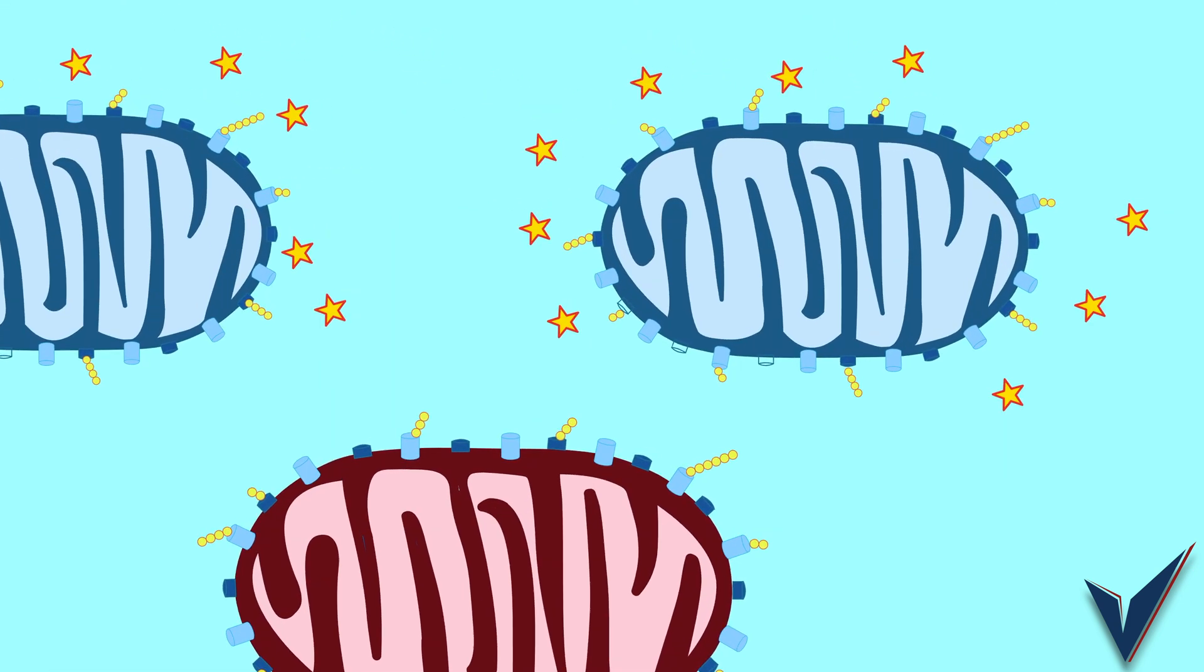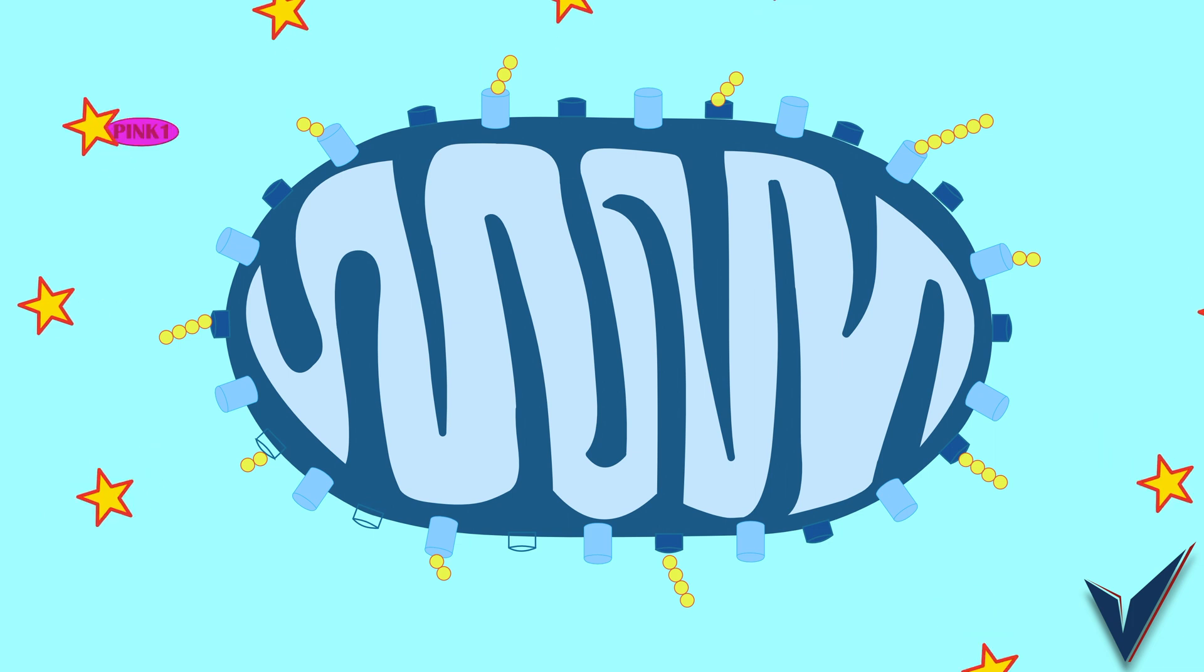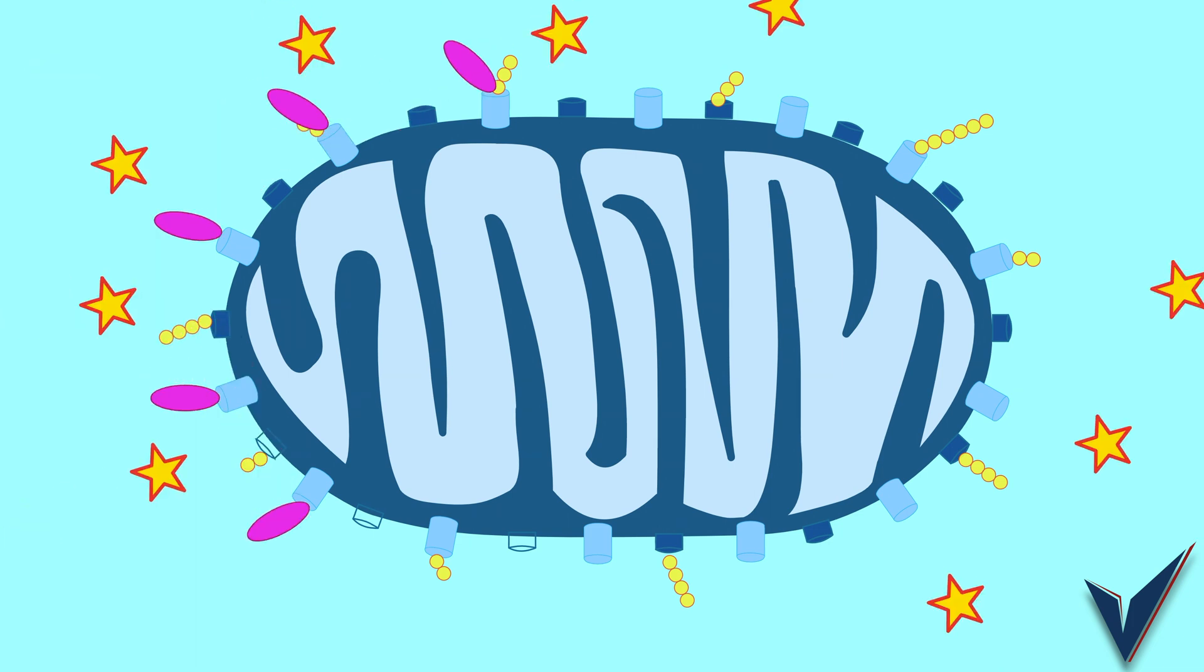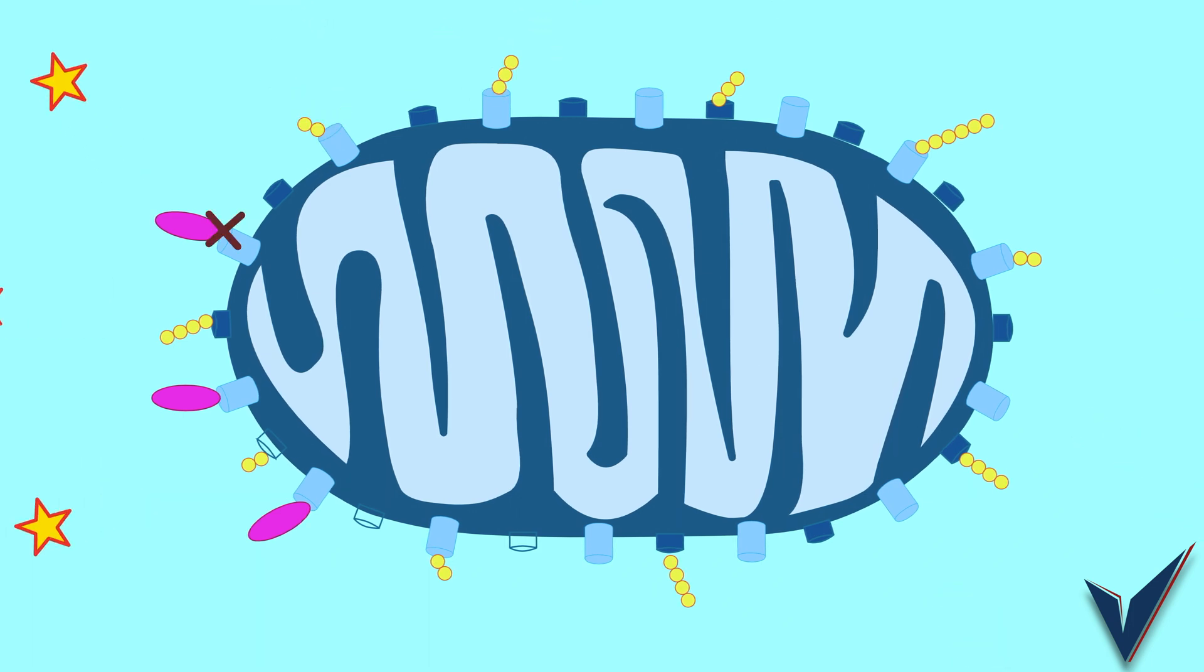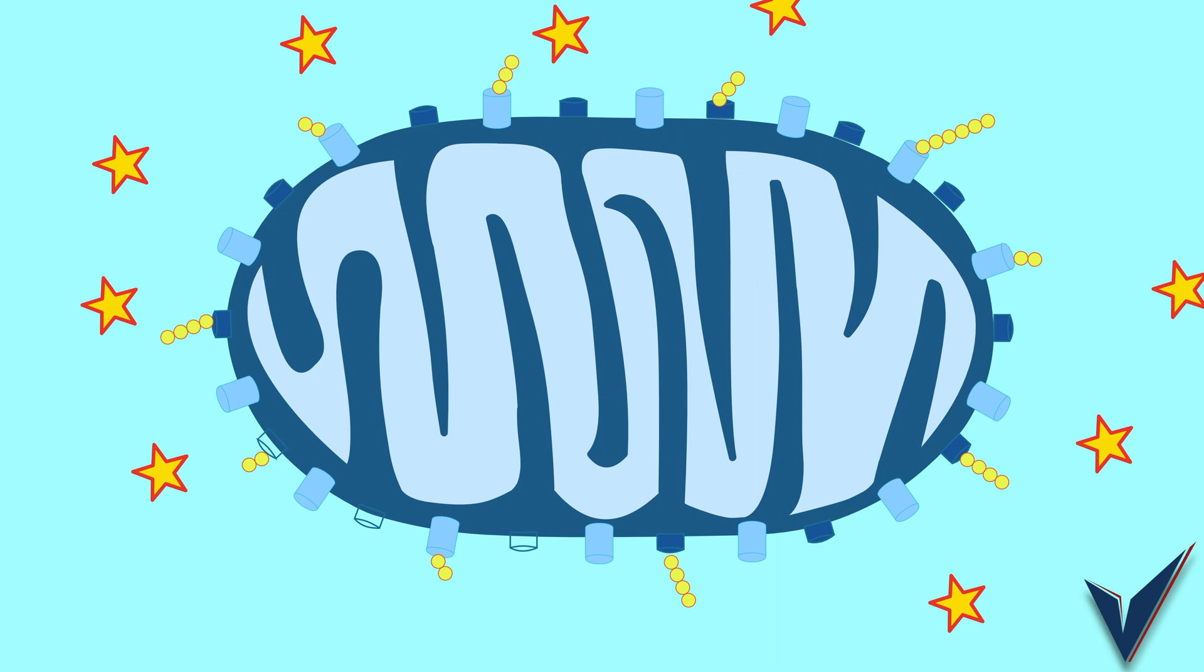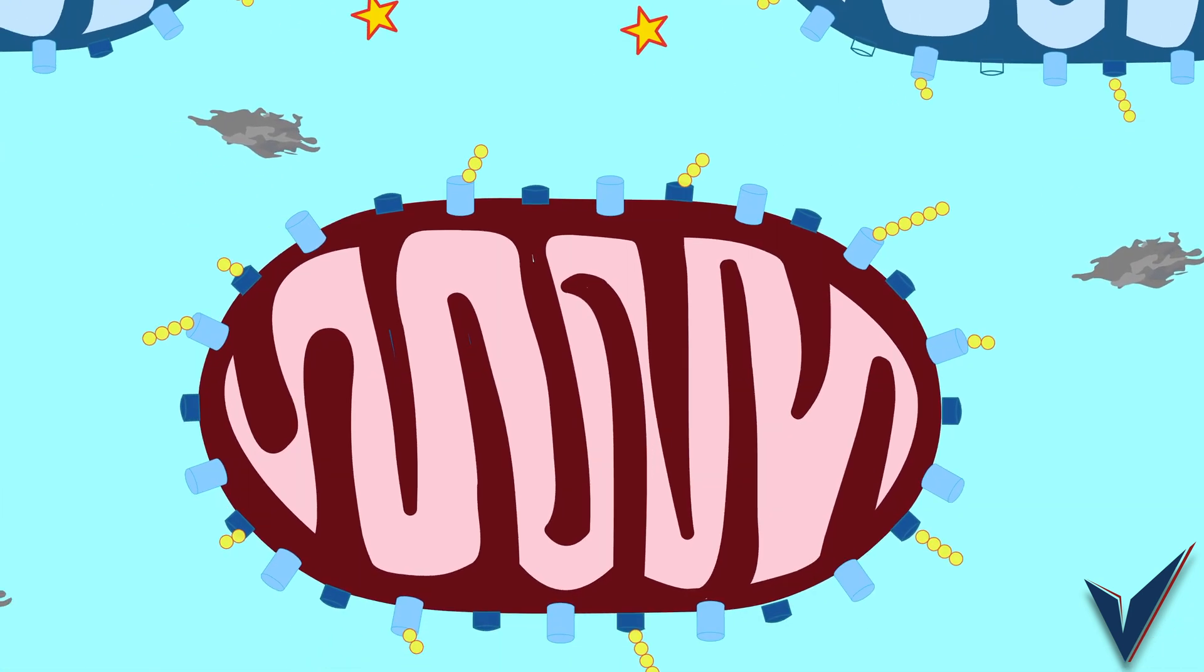So here is how Parkin-mediated mitophagy happens. An enzyme called Pink1 is recruited to the mitochondrial membrane. When the mitochondria is healthy, it removes Pink1. However, when the mitochondria is damaged or depolarized, this Pink1 enzyme accumulates on the outer membrane and starts to phosphorylate outer mitochondrial membrane proteins.